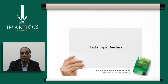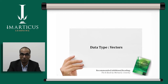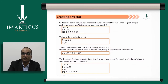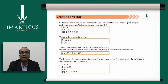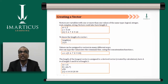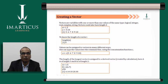Now we move to data types, starting with vectors. Don't confuse these with vectors from graph notation — they are different. Vectors in R are variables with one or more values of the same type. They are atomic in nature, meaning a vector contains a collection of either numbers, integers, strings, complex numbers, or real numbers — but these types cannot be mixed.